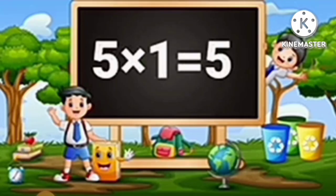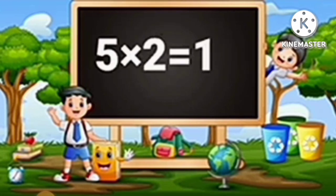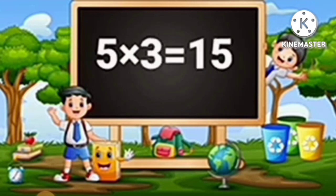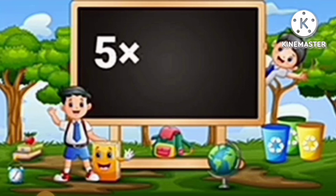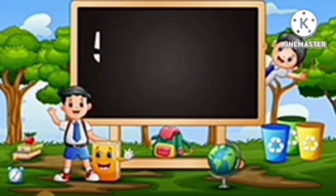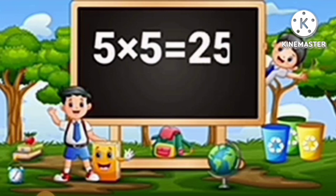Table of 5: 5 ones are 5, 5 twos are 10, 5 threes are 15, 5 fours are 20, 5 fives are 25.